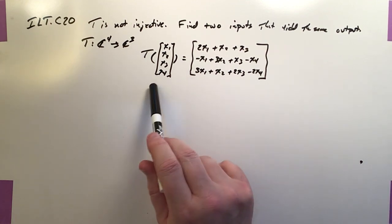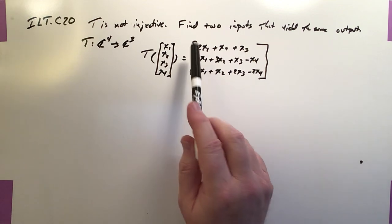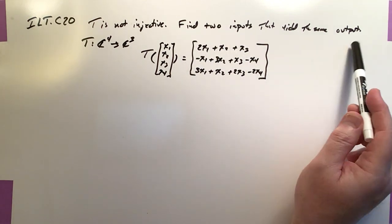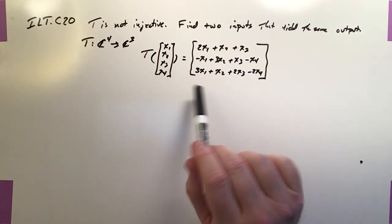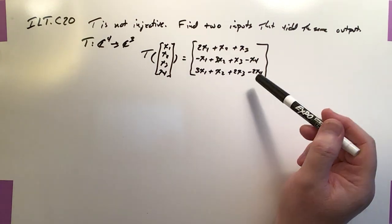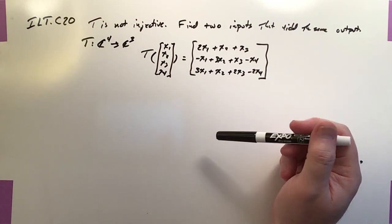So what they want us to demonstrate is why this one is non-injective. We want to find two different inputs that yield the same output. Because they don't specify the output, it's really up to us. And the easiest output to find, of course,